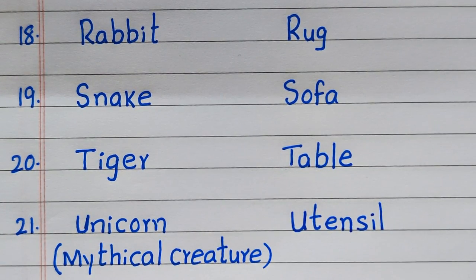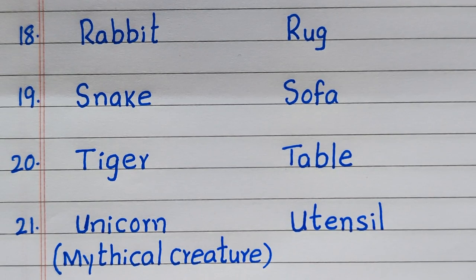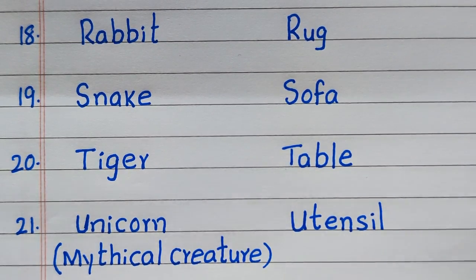With the alphabet R, living thing is rabbit, whereas non-living thing is rug. S: snake, sofa. T: tiger, table. U: unicorn, utensil.